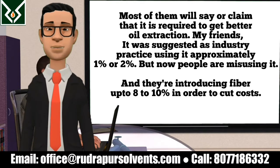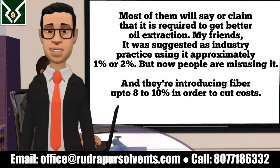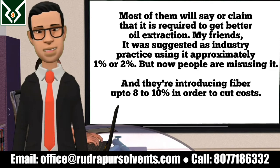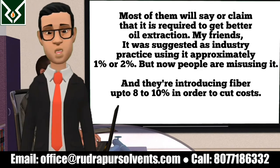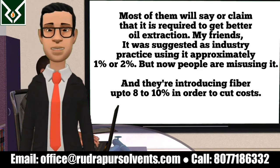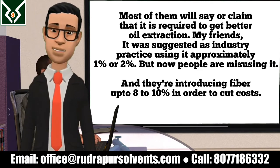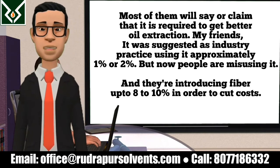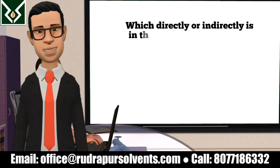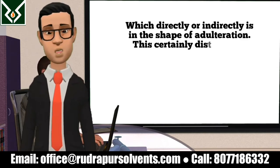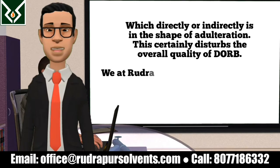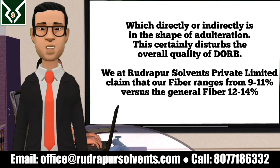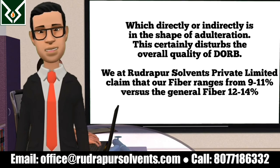My friends, it was suggested as industry practice to use approximately 1% or 2%. But now people are misusing it and introducing fiber up to 8-10% in order to cut costs, which directly or indirectly is in the shape of adulteration. This certainly disturbs the overall quality of DORB.